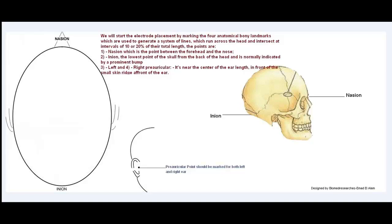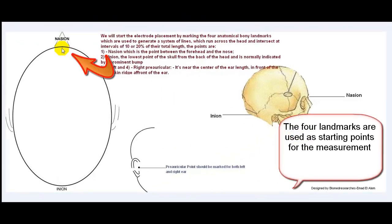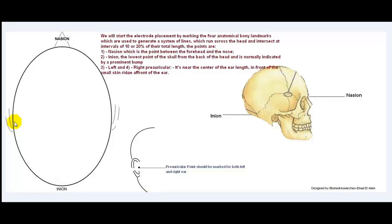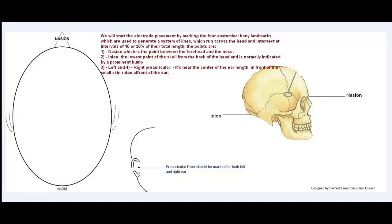We will start the electrode placement by marking the four anatomical bony landmarks. These are landmarks where we will not connect electrodes, but we will use them as a starting point for measurements. The four landmarks are: first, the nasion, which is the point between the forehead and the nose. The second landmark is the inion — the lowest point of the skull from the back of the head, normally indicated by a prominent bump. And we will mark the left preauricular and right preauricular areas, located near the center of the ear length in front of the small skin ridge in front of the ear, as indicated here.